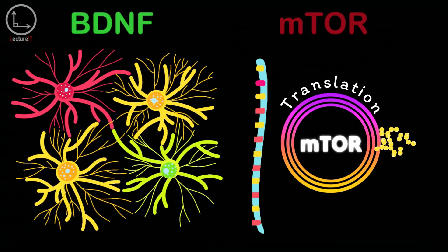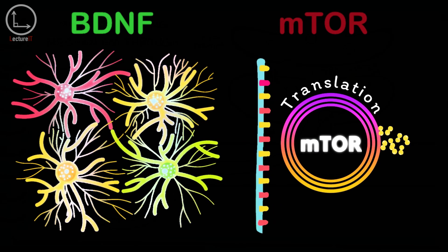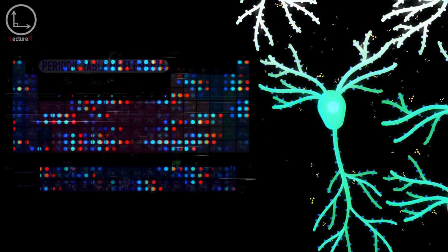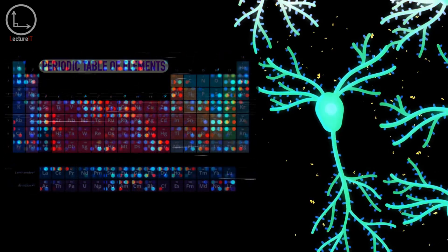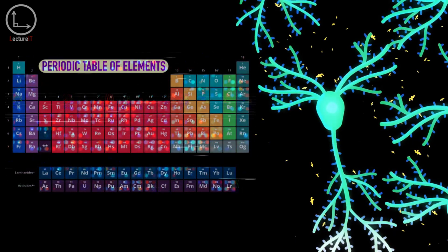This intricate feedback loop and the involvement of multiple signaling pathways highlight the complexity of memory consolidation. The repeated cycles of protein production and the resultant accumulation at synaptic hotspots essentially cement the memory in place, making it more durable and resistant to degradation over time.